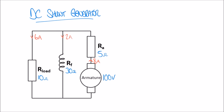Now that we know this, we can calculate the power in the load — the output power of our generator — using the formula P equals I squared times R. In this case it's the power in the load resistor, so we use the load current squared multiplied by the load resistance: 6 squared multiplied by 10 ohms, which gives 360 watts.